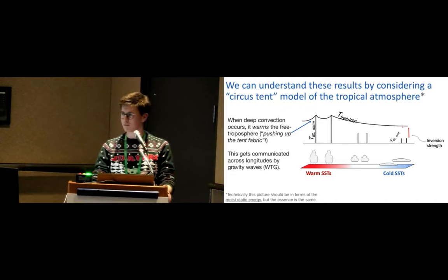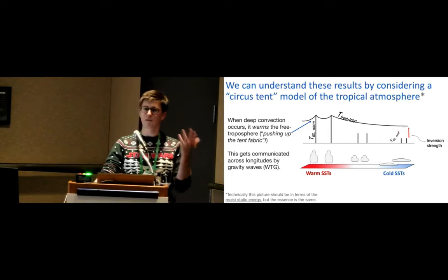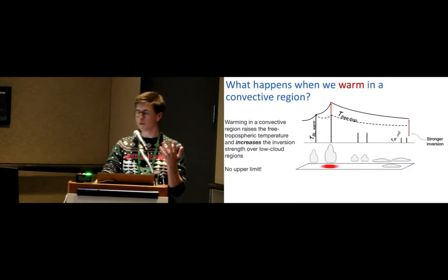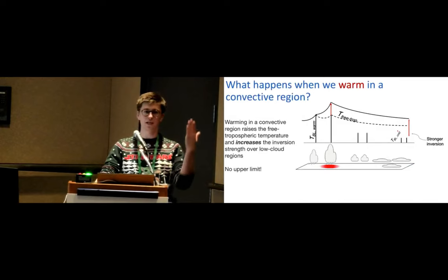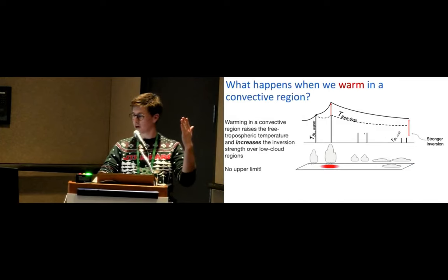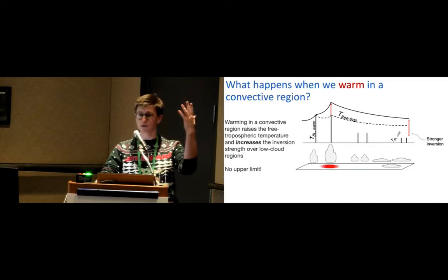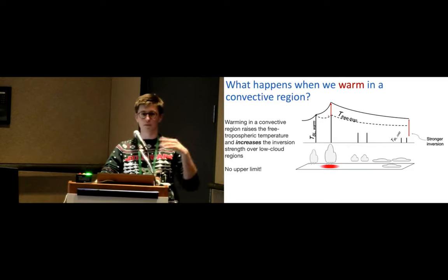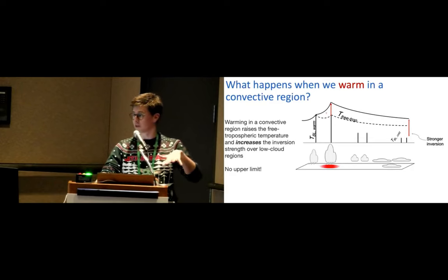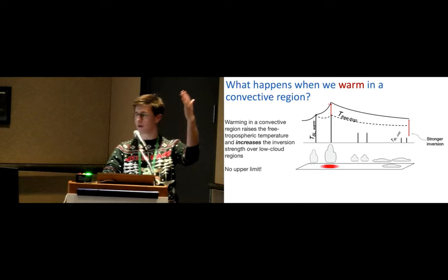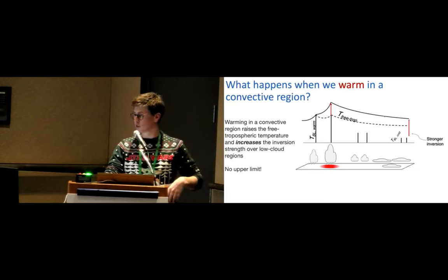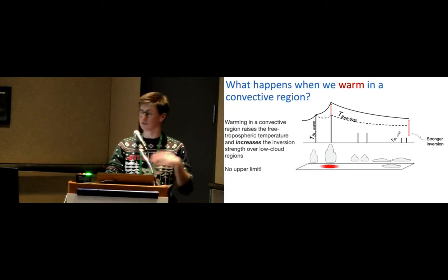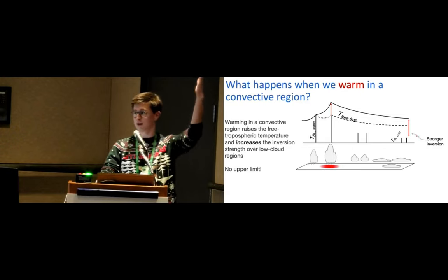So hopefully that's made it clear. So we can use this model now, and we can think about, okay, what happens if we warm in a convective region? So if you warm in a convective region, what you're doing is you're taking a tent pole, which is already in contact with this fabric, the temperature of the free troposphere, and you're just pushing it up, because the height of the pole is correlated with the warmness, how warm the boundary layer is. So you push up the height of this tent fabric, that it gets imprinted across the whole of the tropics, you get stronger inversions, more low clouds, negative TOA. And there's no obvious upper limit to this. You can just keep punching up into that tent fabric.